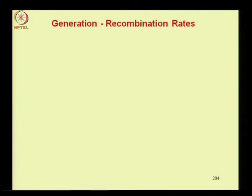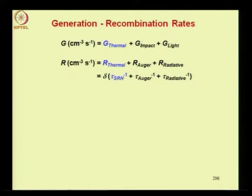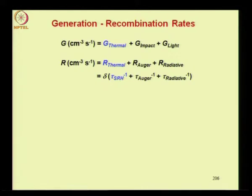The volume generation rate is due to thermal generation, impact ionization generation, and generation by light. The corresponding inverse recombination processes are thermal recombination, Auger recombination (inverse of impact ionization), and radiative recombination (inverse of optical generation). Each recombination rate can be expressed as proportional to the excess carrier concentration, with the proportionality constant being the reciprocal of a lifetime. So for each process you have a lifetime: the lifetime for thermal recombination is predicted by Shockley-Read-Hall theory; similarly you have lifetimes for Auger and radiative processes, and you can use the overall formula to predict the total recombination rate.